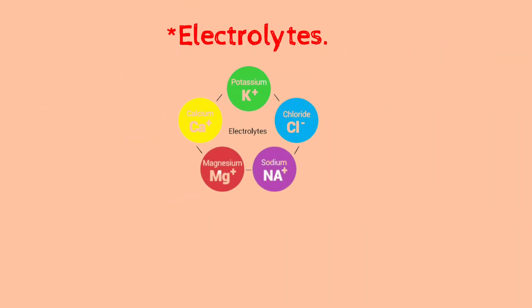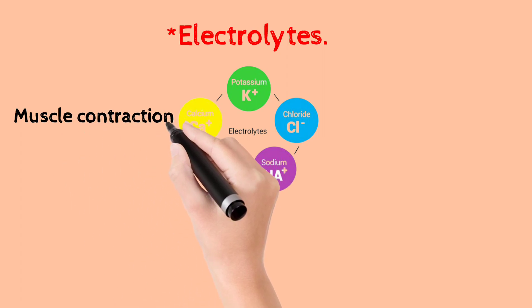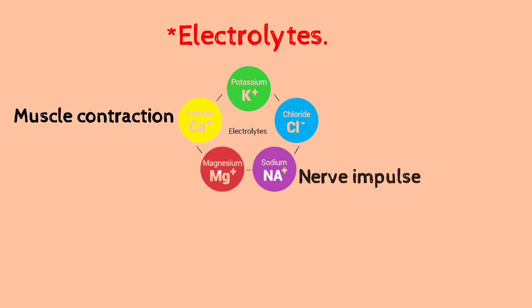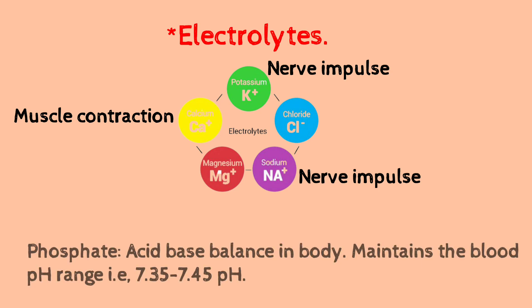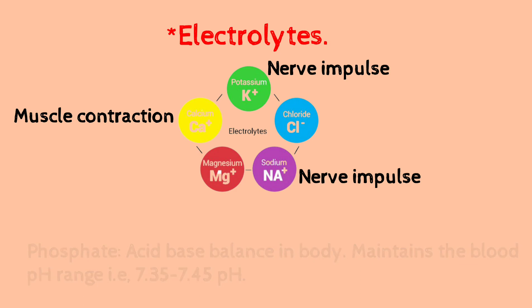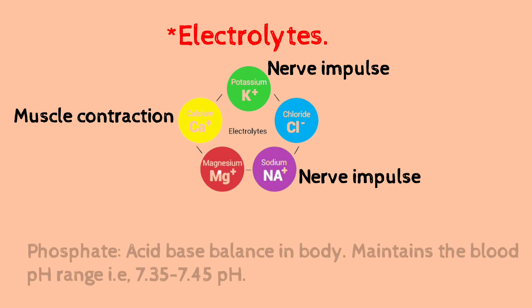Plasma also contains electrolytes. Electrolytes include calcium, which is important for muscle contraction, sodium and potassium, which are important for nerve impulses, and phosphate, which helps in acid-base balance. Blood average pH is 7.35 to 7.45. In this range, the electrolytes play a role.